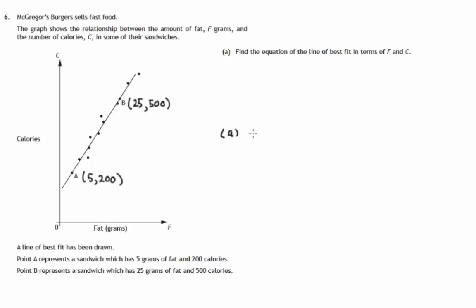We first of all find the gradient of the line. Y difference divided by X difference. So it would be 500 minus 200, that's the two Y coordinates. Over the X difference, 25 minus 5. Make sure you start with the same point that you started with in the top difference. So 25 minus 5.